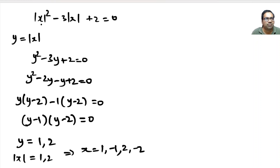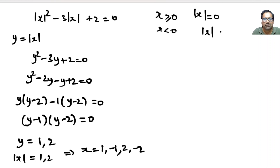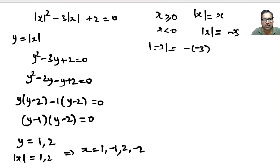The other way is: when x is greater than or equal to 0, then absolute value of x equals x — that is the definition. When x is less than 0, absolute value of x equals minus x. For example, when x is minus 3, absolute value of x is minus of minus 3, which equals 3.